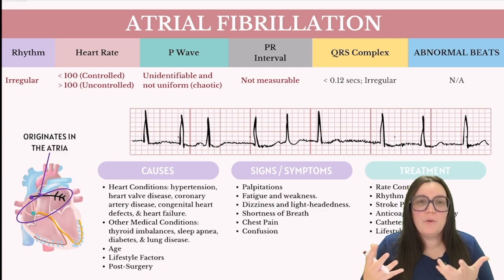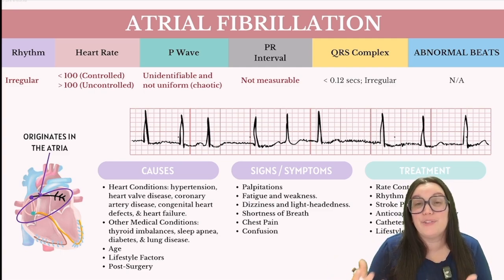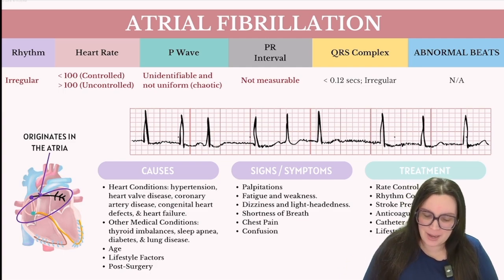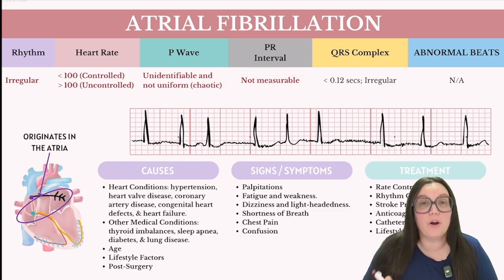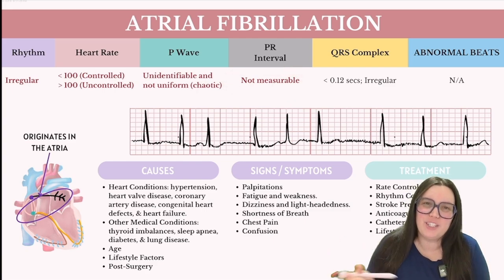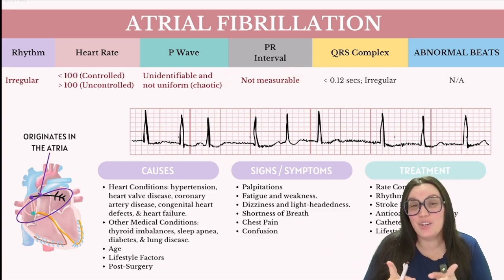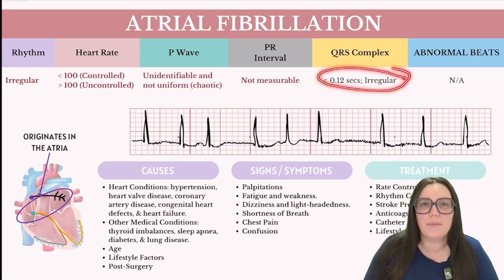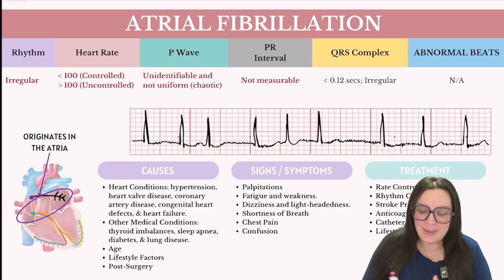This often results in what we call fibrillatory waves, or sometimes a flat line where traditional P waves are absent. Because of this, there will be no P-to-QRS ratio, and when it comes to our PR interval, we're also going to see it be non-measurable because we don't have distinctive P waves. The good news is that the QRS complex is going to remain completely normal and narrow, being less than 0.12 seconds.